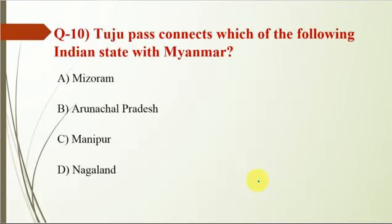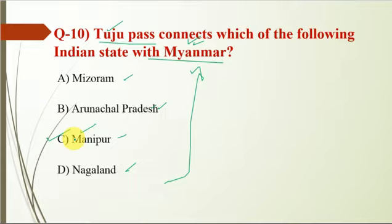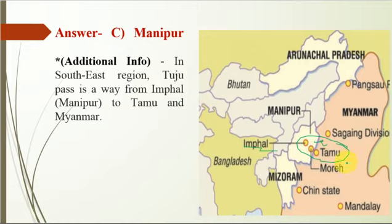Question 10: Tuju Pass connects which Indian state with Myanmar? This question might be confusing because all the given states share a border with Myanmar. But Tuju Pass connects Manipur with Myanmar — option C. A map is shown; though Tuju Pass is not marked, it connects from Imphal to Tamu in Myanmar.